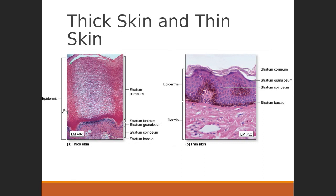When eleidin is secreted by the stratum lucidum, it acts as a glue, making for a much thicker and more robust stratum corneum. Remember that stratum corneum is constantly being abraded. With eleidin, it can take a lot more abuse, building up to a thicker, more dense structure. So thick skin found on palms and soles does have the distinct stratum lucidum, but really it's the enormous difference in the stratum corneum that makes thick skin physically thicker.